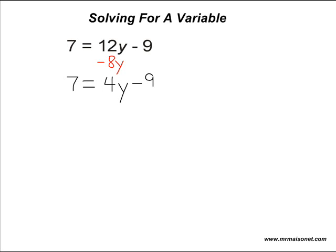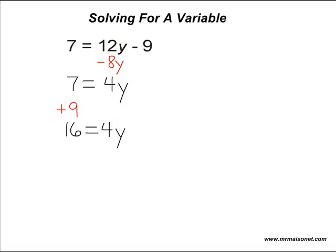Now we are going to combine the 7 and the negative 9 because those are like terms. The opposite of minus 9 is plus 9. That will cancel itself out on the right side, but to balance our equation, we move positive 9 to the left-hand side. 7 plus 9 gives us 16, so now we have the equation 16 is equal to 4y.